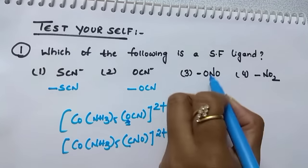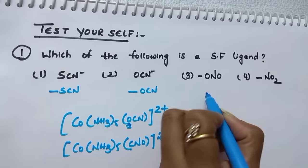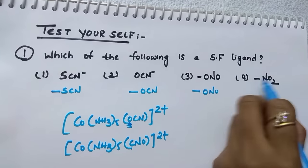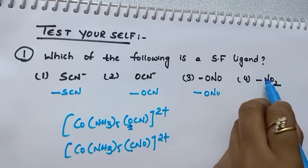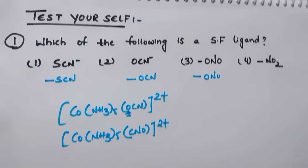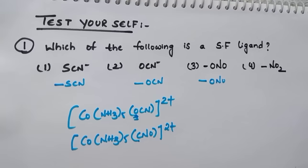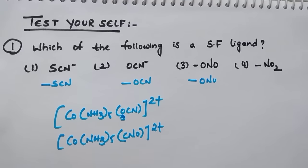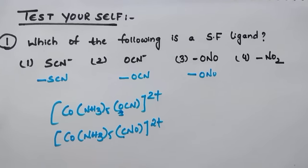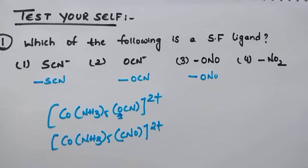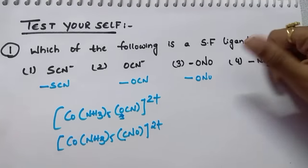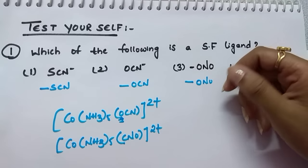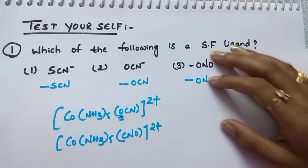Here oxygen is the donor — O, N, O. Oxygen is the donor. And NO₂⁻ — nitrogen is the donor. Identify the strong field ligand — that is your question. I hope you liked this video. Thanks for watching. Don't forget to give a like, and if possible, try to share with your friends.